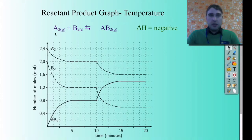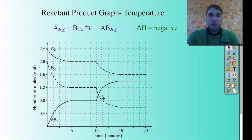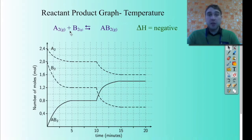Here's an example: A2 + B2 → AB2, and in this case delta H is negative, so the forward reaction is exothermic and the reverse is endothermic. Looking at the graph, we reach equilibrium and then see a change — the concentration of AB2 increases while the concentrations of A2 and B2 decrease. We're favouring the forward reaction. Since delta H is negative, this means the system has been cooled down. Cooling the system shifts equilibrium in the direction that produces more heat energy — in this case shifting to the right, making more AB2.